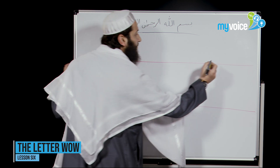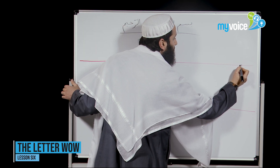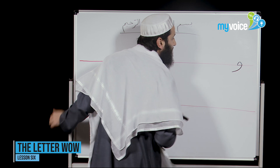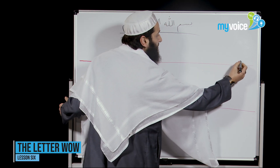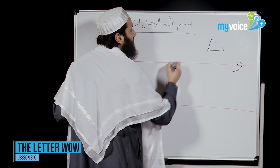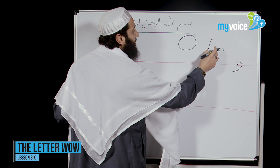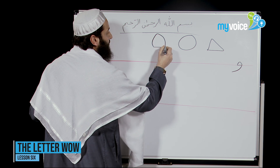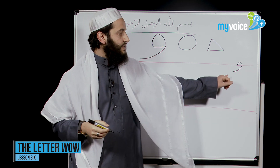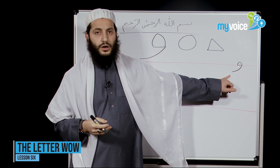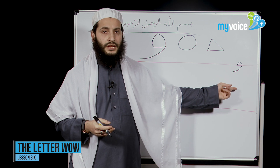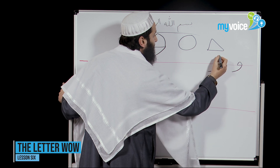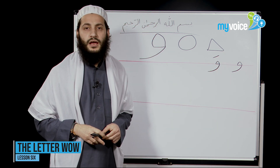WAW. To write WAW, we start from this side to the top and then make this shape. The shape here is not a triangle, not a circle — it's like a triangle with a circle. You write it like this way and then continue like this way. This is the shape of the letter WAW. The name is WAW, and the sound with the Fatha is WA.